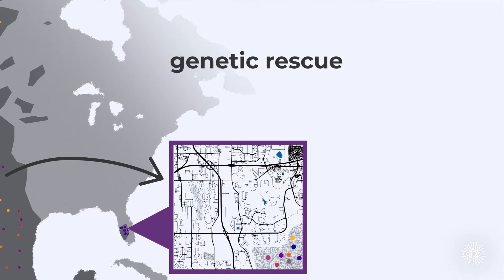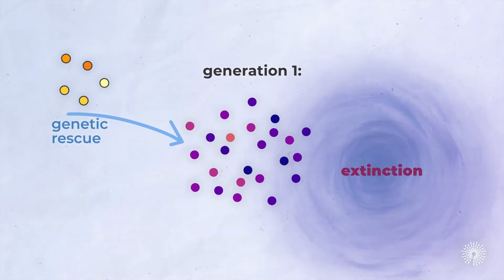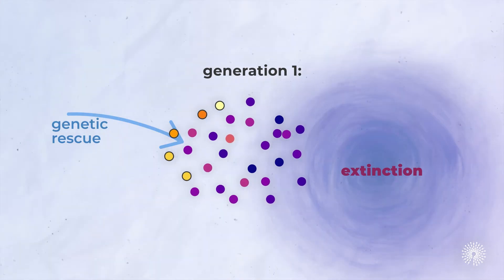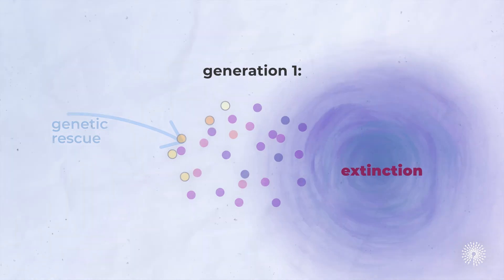The resulting offspring will gain new alleles that improve survival and reproduction rates. And over a few generations, this more genetically diverse population will thrive and grow.